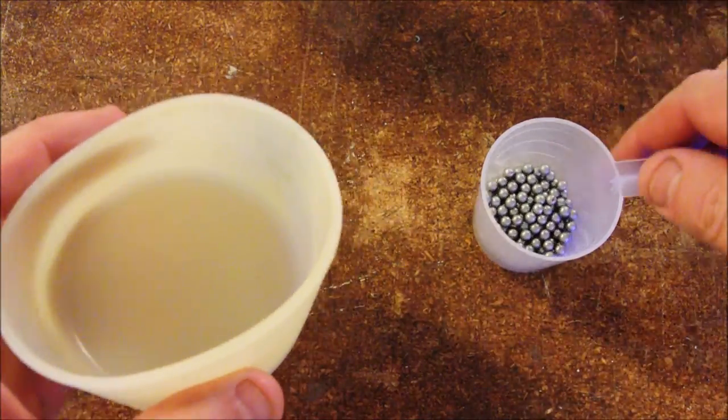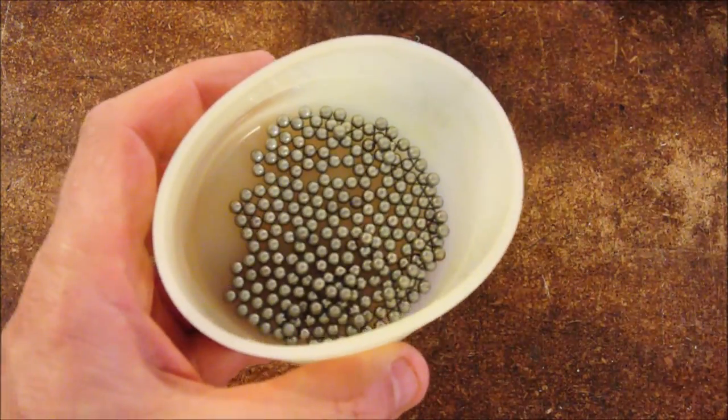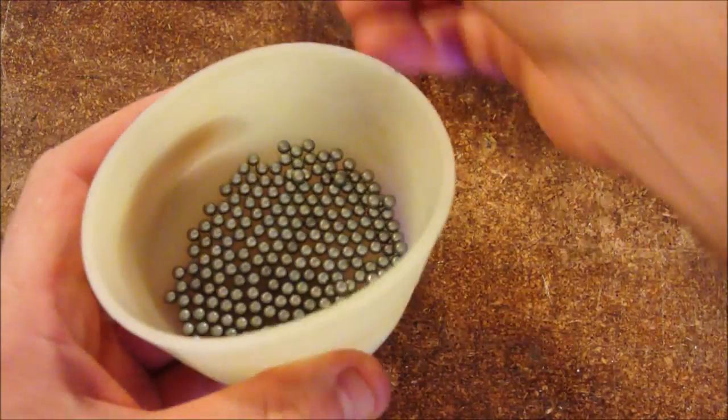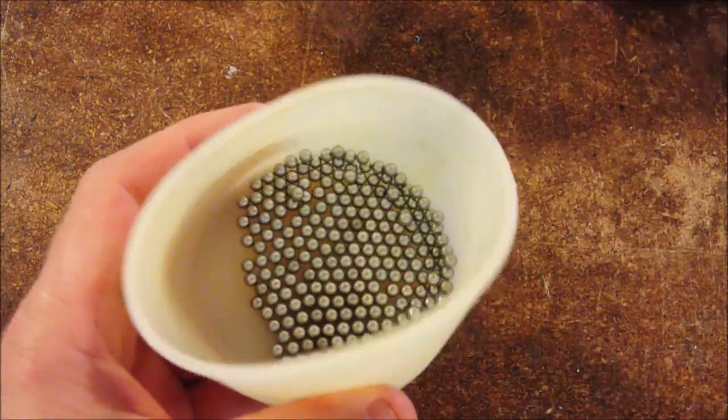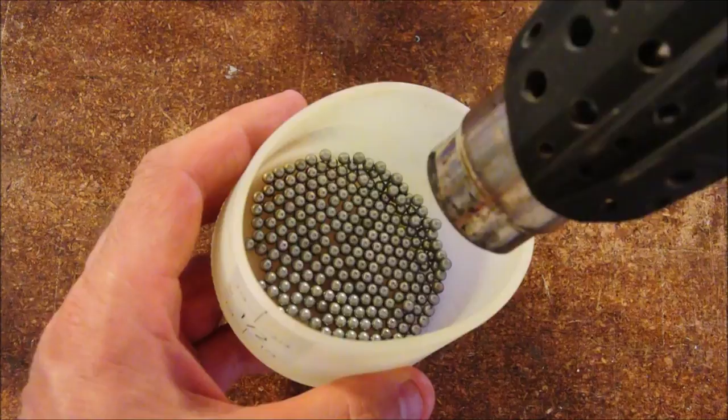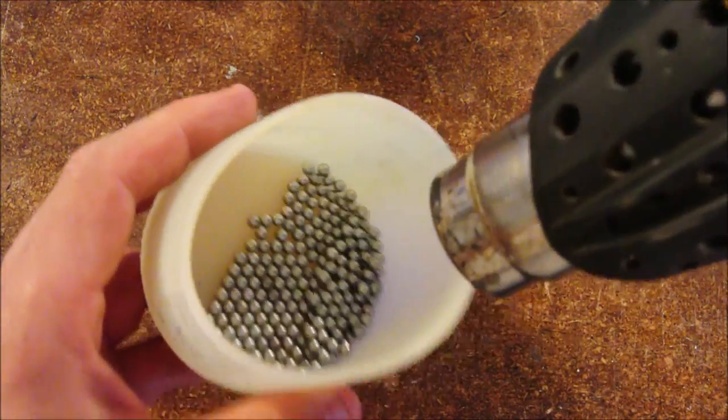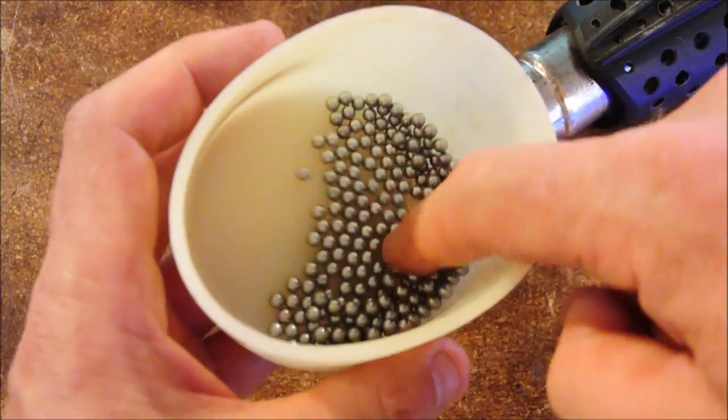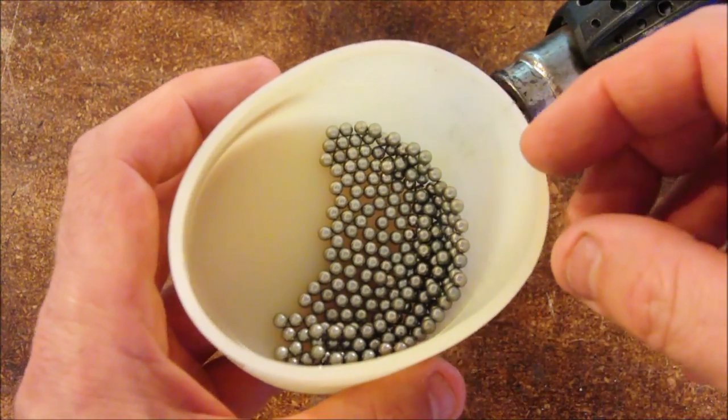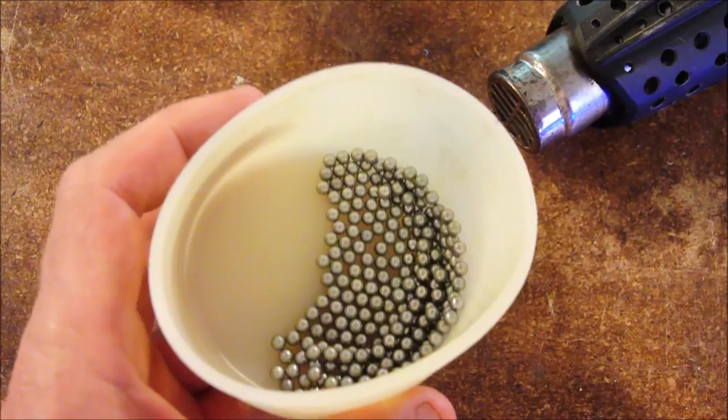Epoxy doesn't stick well to silicone. Why not? Science! Also, we need to get the BBs nice and hot. Conveniently enough, silicone's also heat resistant. Why am I heating them up? Because the warm metal will thin the epoxy down, and it just gives you a better overall bond.